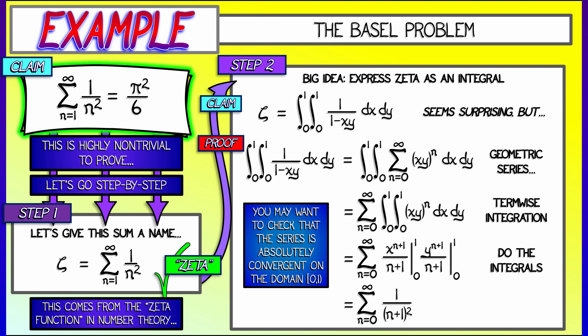What's the integral of x to the n? It's x to the n plus 1 over n plus 1. What's the integral of y to the n? It's y to the n plus 1 over n plus 1. Evaluate both of these from 0 to 1. And I get the sum as n goes from 0 to infinity of 1 over quantity n plus 1 squared. And that is... Wait a minute. That's not quite zeta. Oh. Oh, no, wait. This is okay. This is going to be equal to zeta if we re-index that. And instead of going from 0 to infinity, going from 1 to infinity and then shifting that term down.